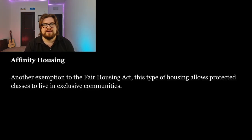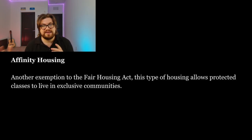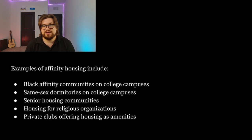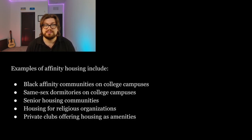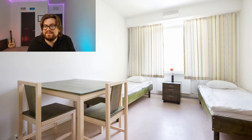Next is affinity housing. Affinity housing is another exemption to the Fair Housing Act. This type of housing allows protected classes to live in exclusive communities. The purpose of these communities is to create a safe space where tenants with shared cultures can live together. Examples of affinity housing include black affinity communities on college campuses, same-sex dormitories on college campuses, senior housing communities, housing for religious organizations, and private clubs offering housing as amenities.